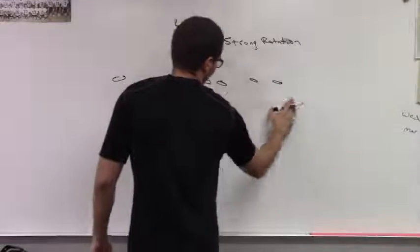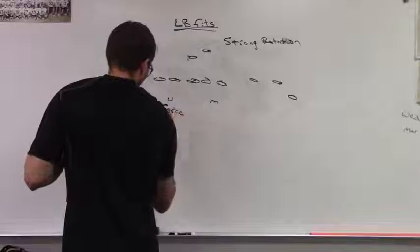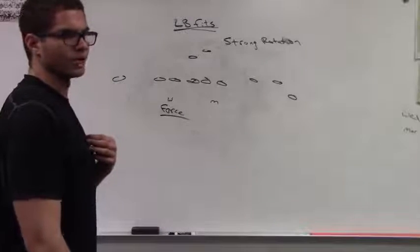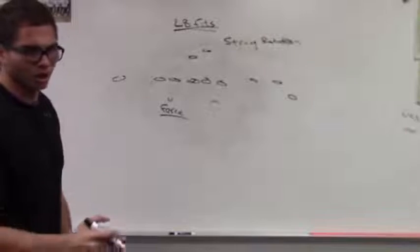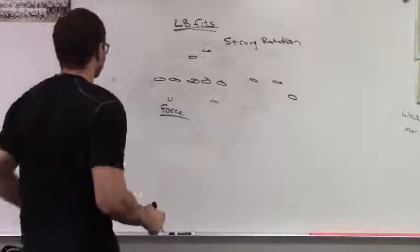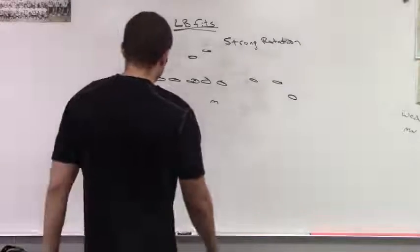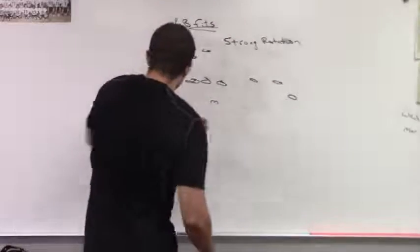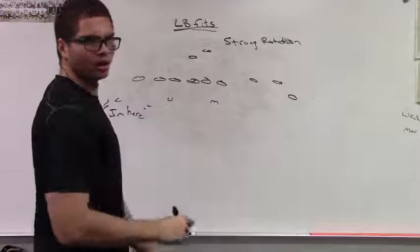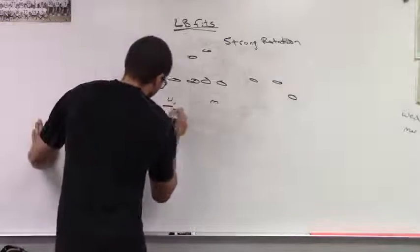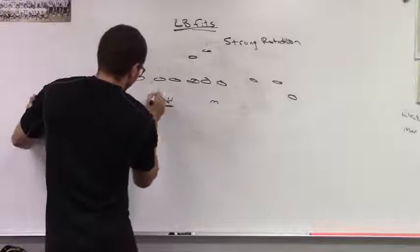In strong side rotation coverages, we do not tilt the linebackers. They will stay in a stacked alignment, and the weak side linebacker is the force defender. There's a call that we make: when we have a strong side rotation coverage and there's a nub flank, we make an 'I'm here' call by the corner. This 'I'm here' call tells the Will that the corner is now the force defender, and the Will can now play inside-out.